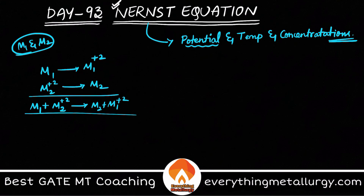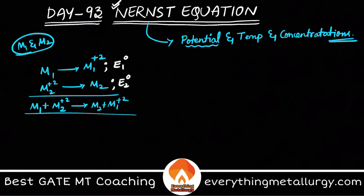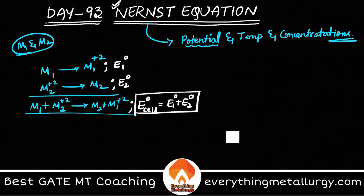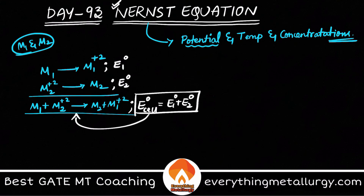For this particular reaction, let's say this half-reaction has E1° and the other has E2°. The E°cell will be written as E1° + E2°. I am taking the reduction potentials here. So E1° + E2° gives this particular standard cell potential.